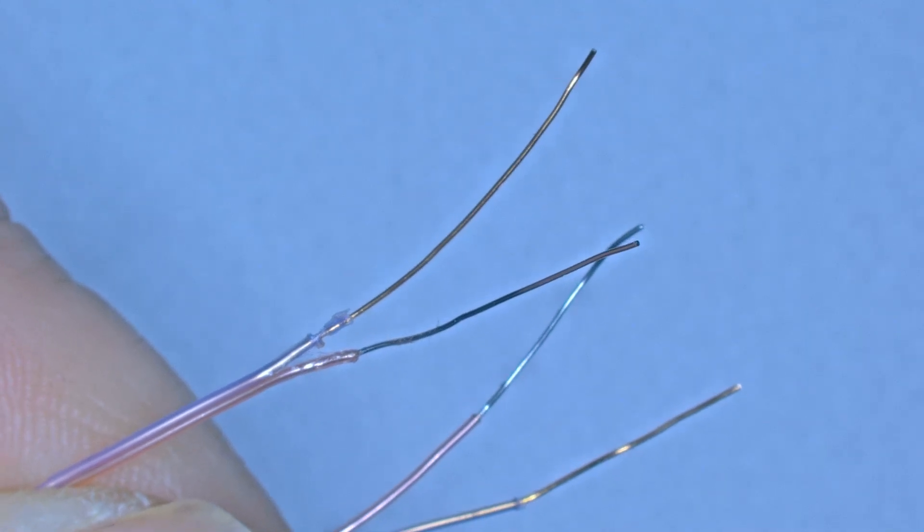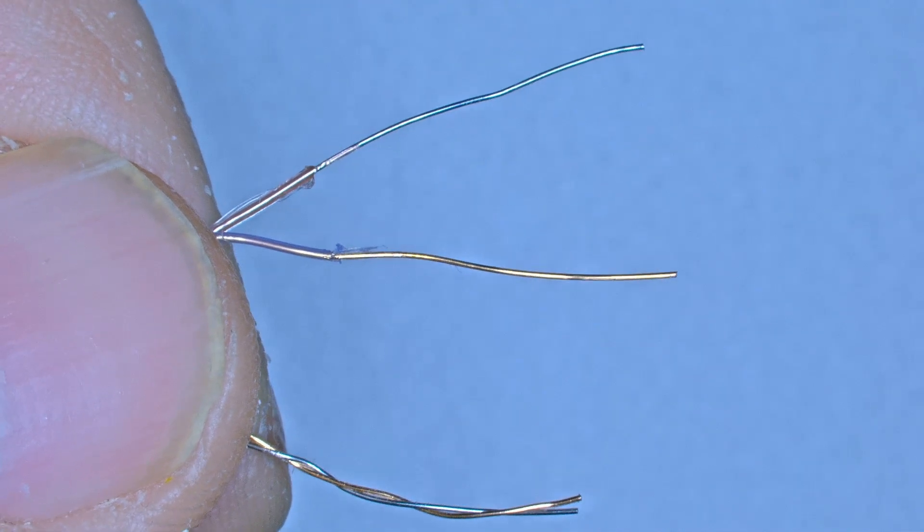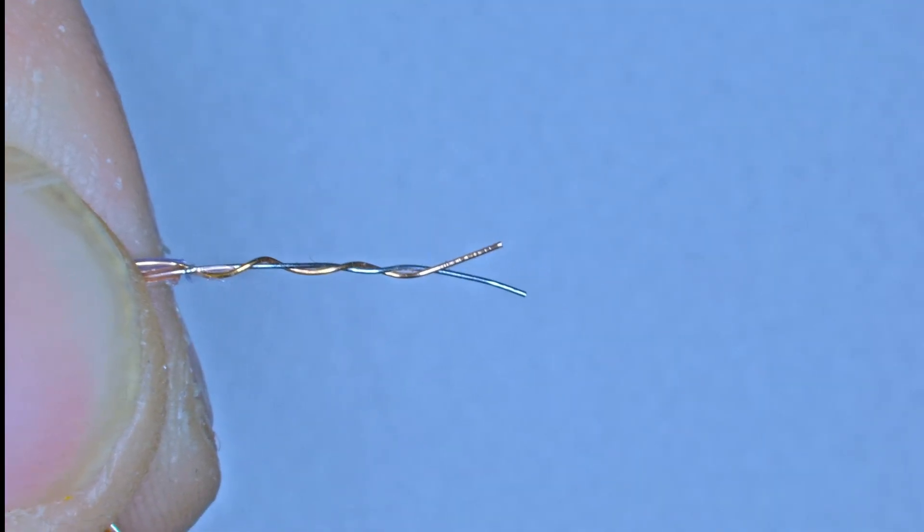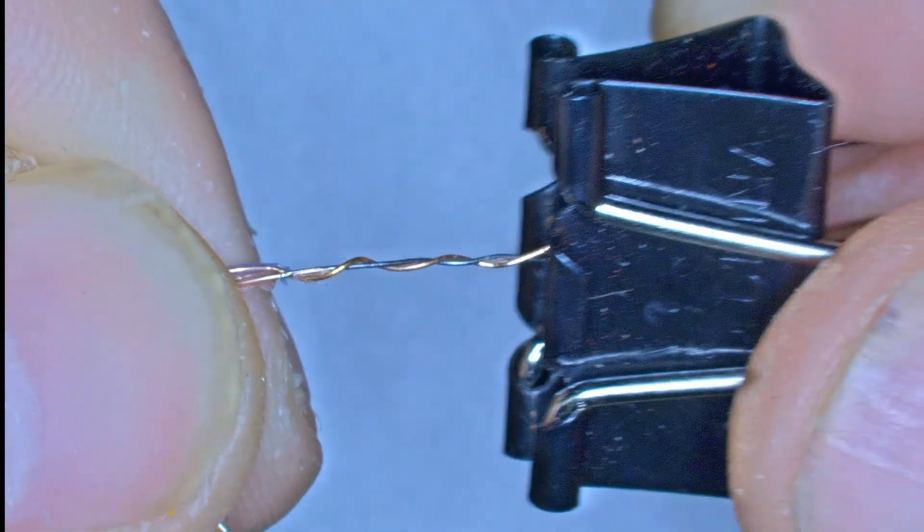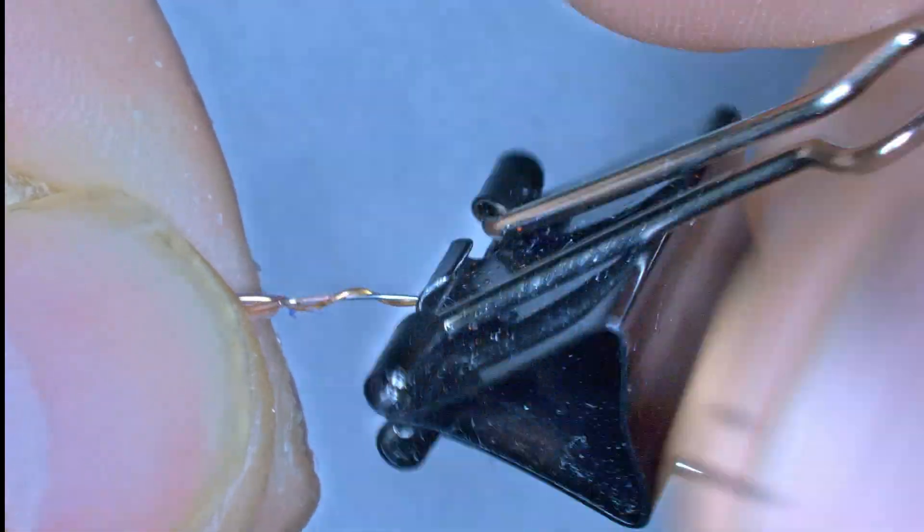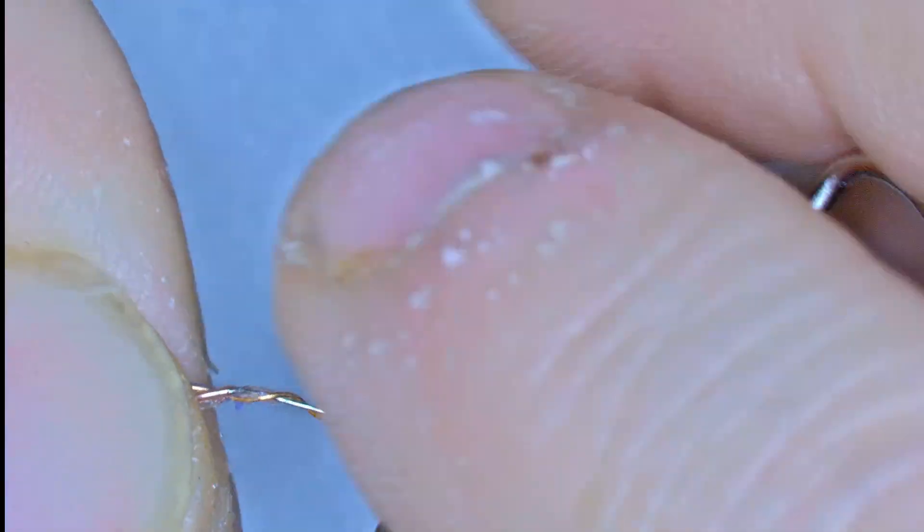So you take both lead ends, and you loosely wrap one side, just to get a good electrical connection. And the other end I tightly wrap, and I use this clip so I can get a good tight wrap, makes it easier to weld.